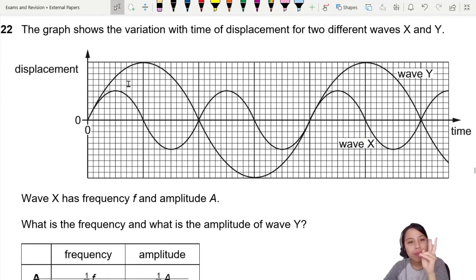Here we have two waves, X and Y. Wave X has frequency F, amplitude A.